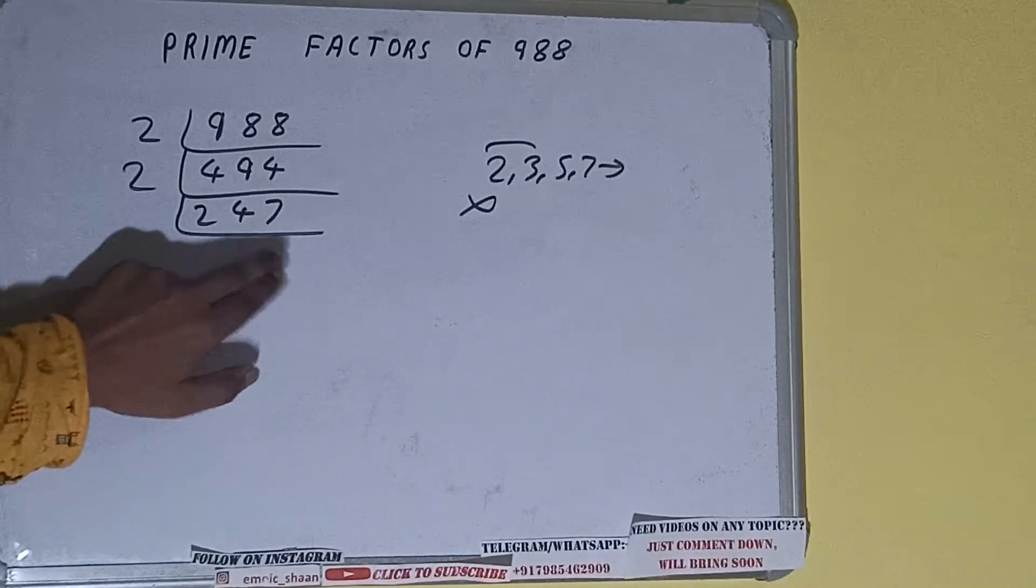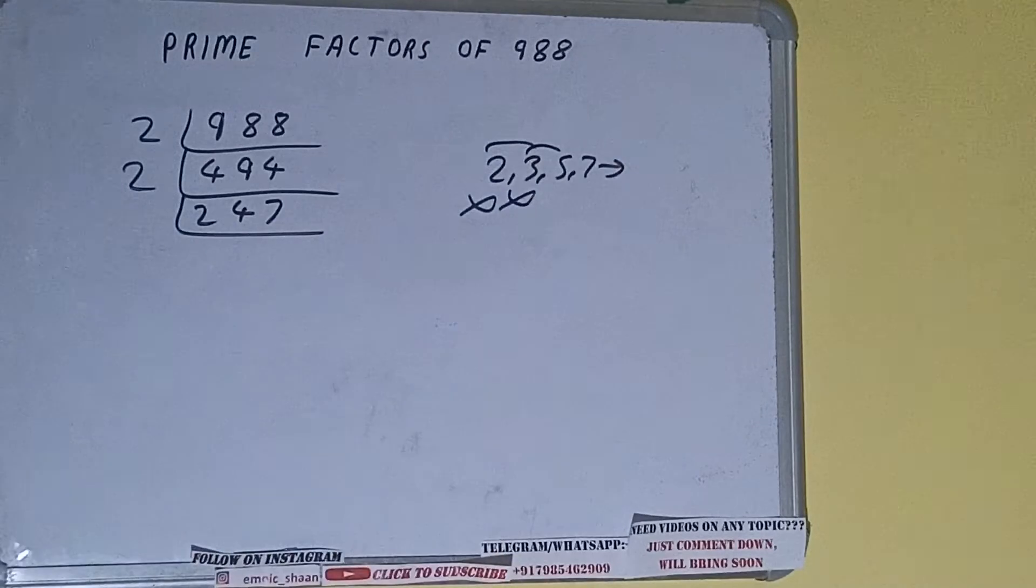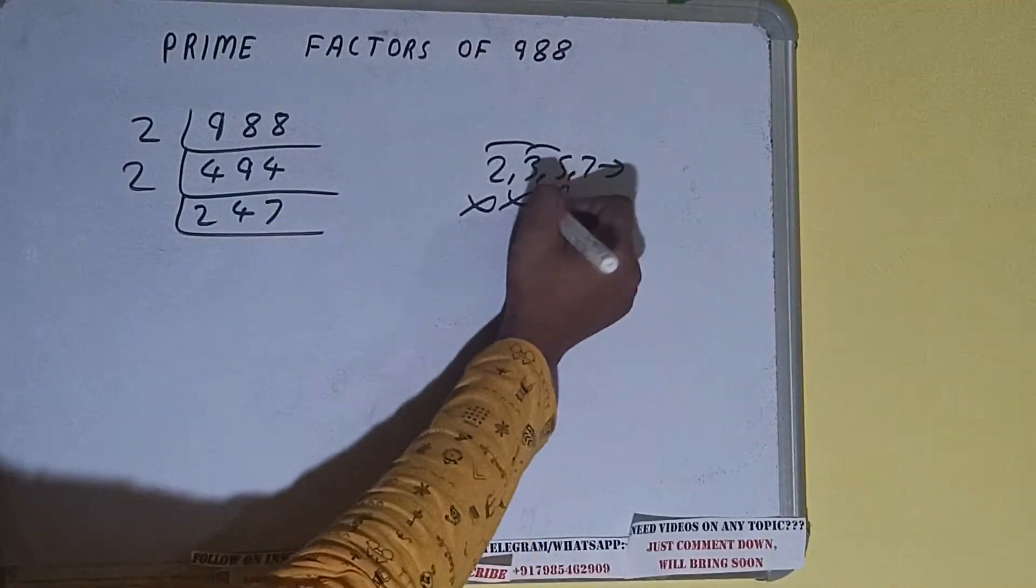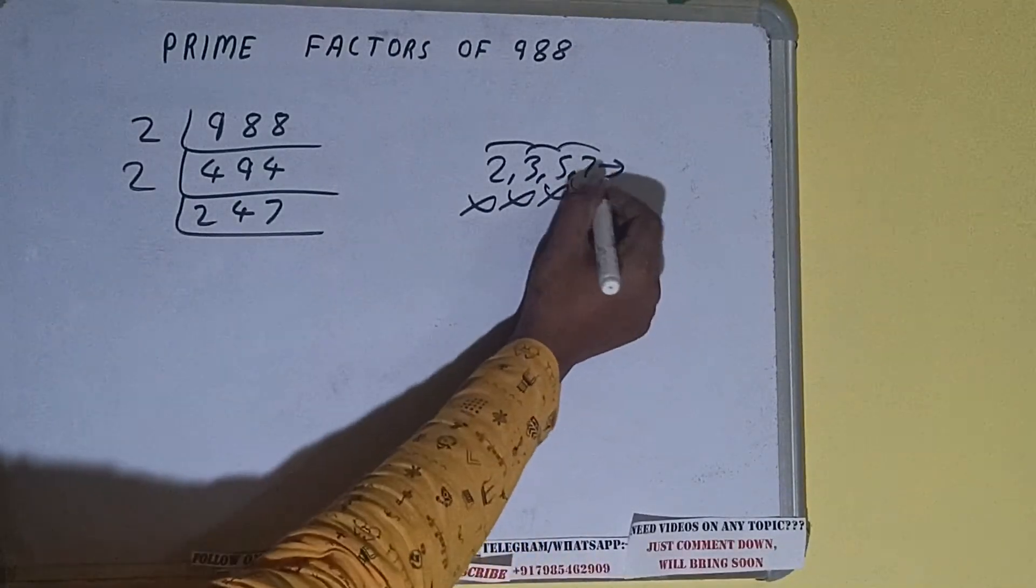2 plus 4 plus 7 equals 13, divided by 3 leaves 1, so it is not divisible by 3. Let's check with 5. The last digit is neither 5 nor 0, so it is not divisible by 5. Let's check with 7. It is also not divisible by 7.